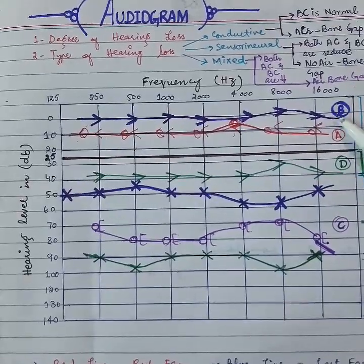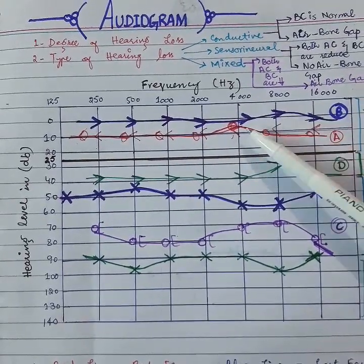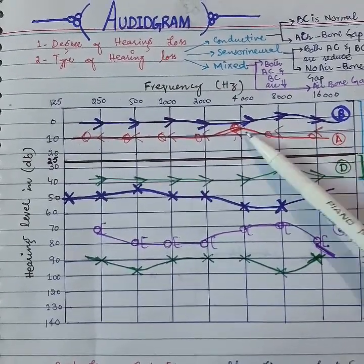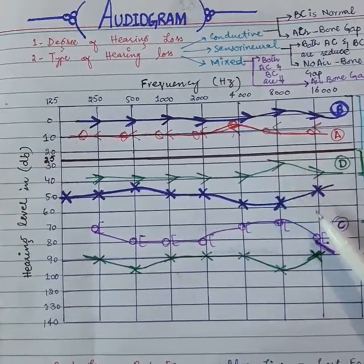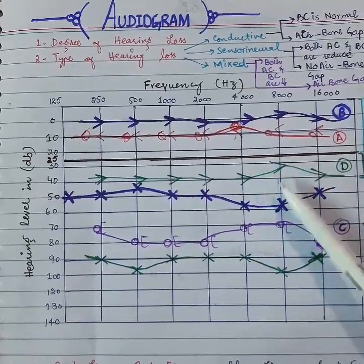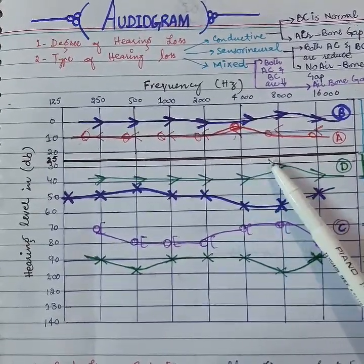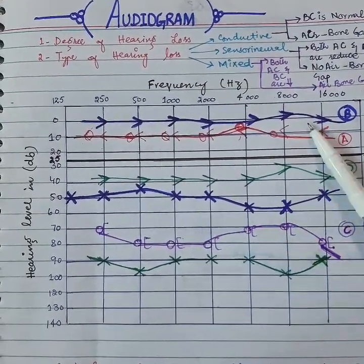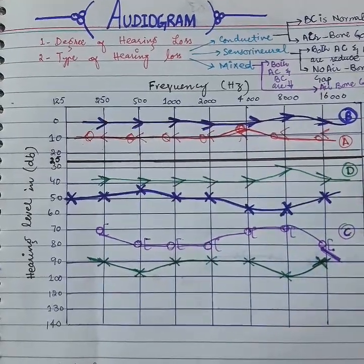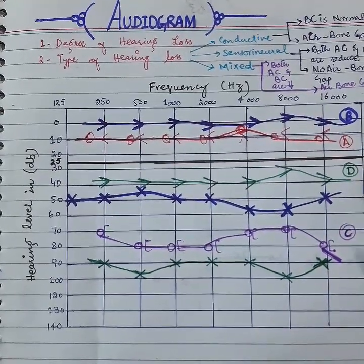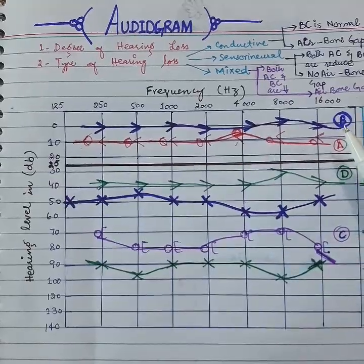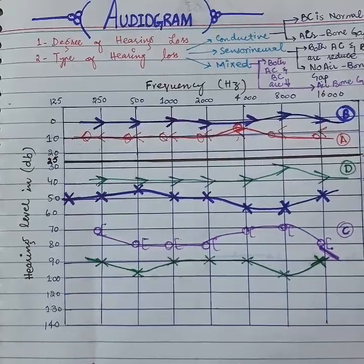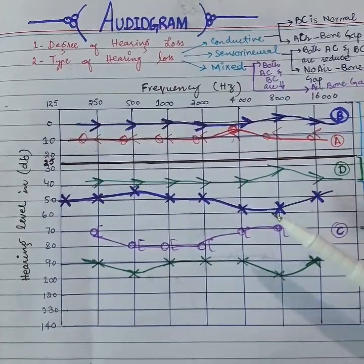The second one is graph B, shown in blue. First, look at the bone conduction, which is in the normal range above 25 decibels. Now look at the air conduction, which is in the abnormal range. There is an air-bone gap. Whenever there is an air-bone gap, it indicates a conductive hearing loss component. And since bone conduction is in the normal range, it indicates pure conductive hearing loss.